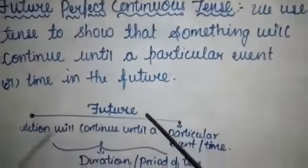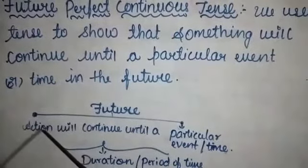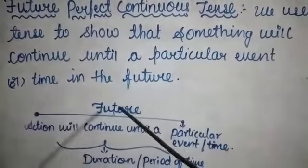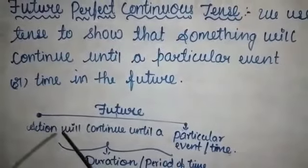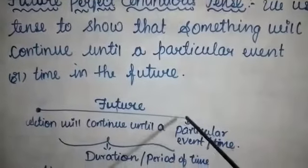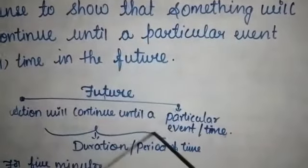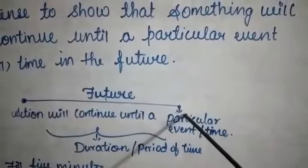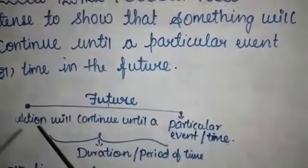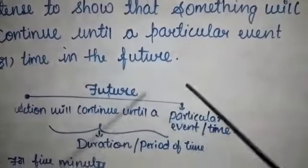I'll explain this clearly. In the future, an action will start and it will continue until a particular event or time in the future. We use future perfect continuous tense to tell about the duration up to a particular point of time or event.